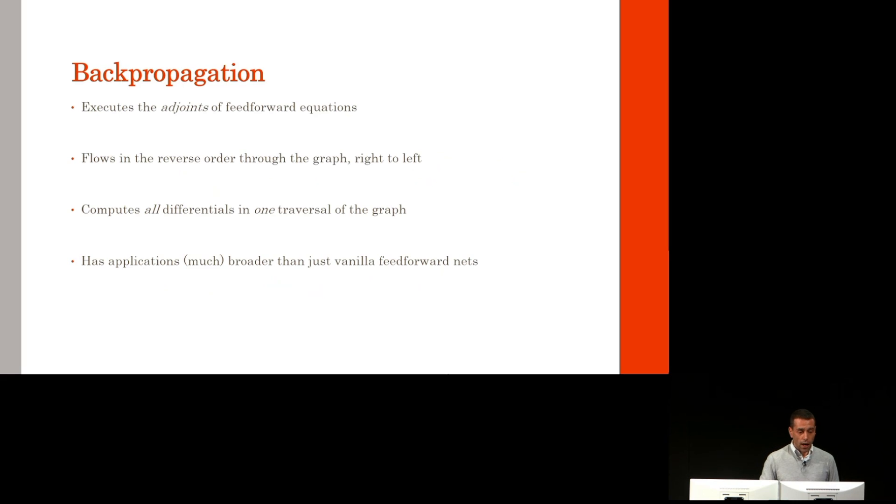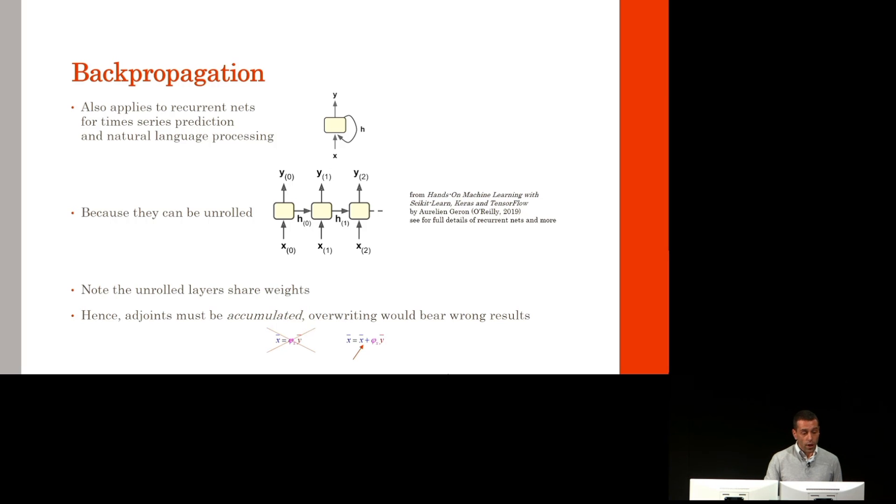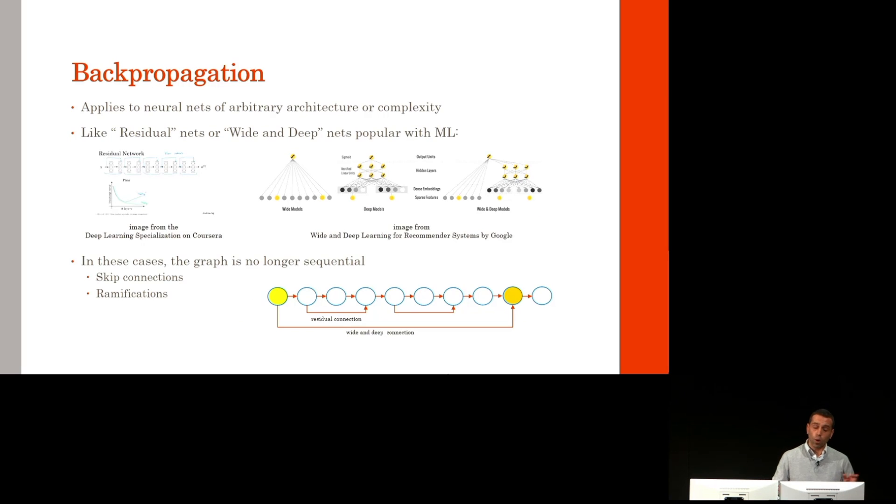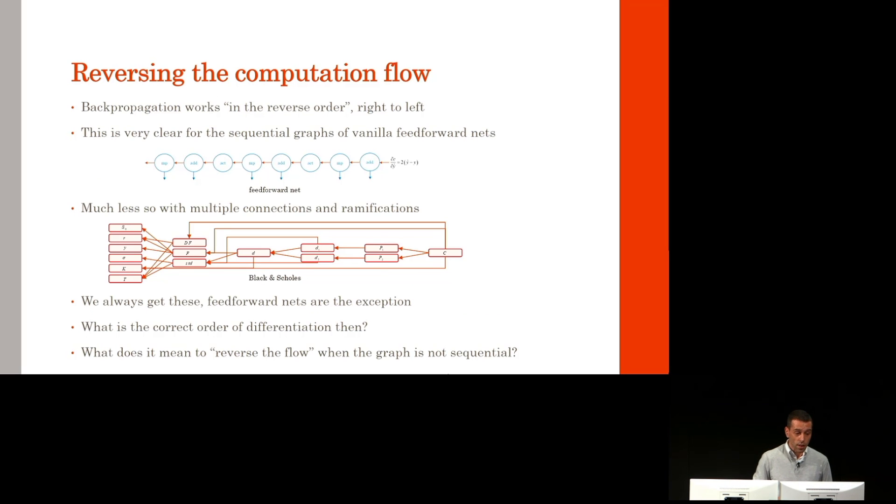Backpropagation, this is how it works, but it has applications much broader than just vanilla feedforward neural networks. It works with convolutional networks because the convolution is just an op. It works with recurrent networks once you unroll them, and it works with all the fancy and complicated neural network architectures fashionable with machine learning. Here's the important result: backprop works with any kind of computation graph. Hence, it works with absolutely any calculation you will ever write in your lives because all calculations define computation graphs. Not only neural nets, but includes Black-Scholes, as we have already seen, and also large Monte Carlo implementations of sophisticated models.